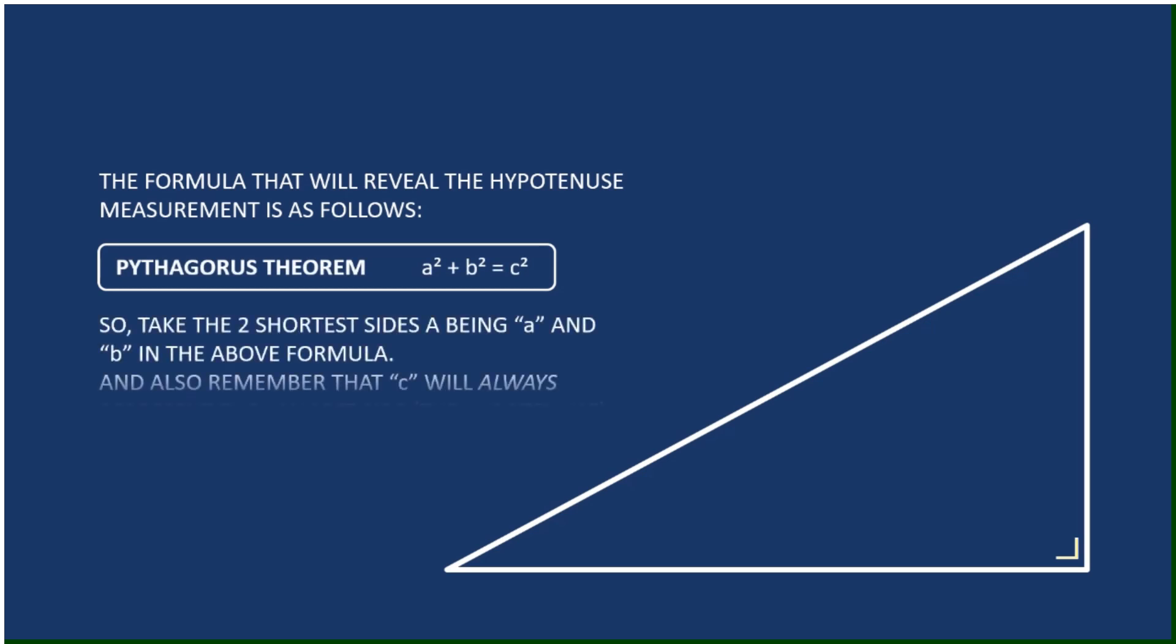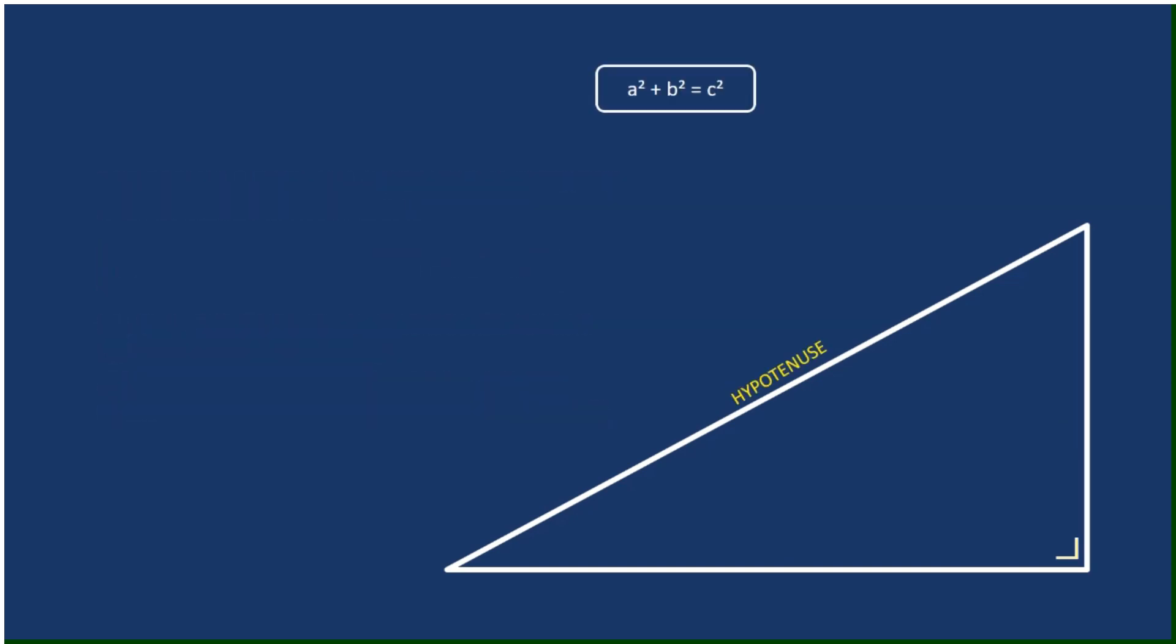Here's the theorem itself which is a squared plus b squared equals c squared, and c always being the hypotenuse side of the right angle triangle which is the longest side. So just bear that in mind.